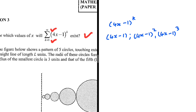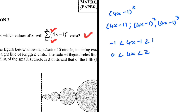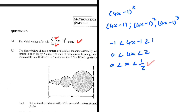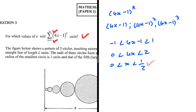For the sum from k equals 1 to infinity to exist, we need the ratio to be between minus 1 and plus 1. Adding plus 1 on both sides gives 0 < 4x < 2. Dividing both sides by 4 gives 0 < x < 1/2. So when x is between 0 and a half, this sum will exist because r will be between minus 1 and 1, and the series will be converging.